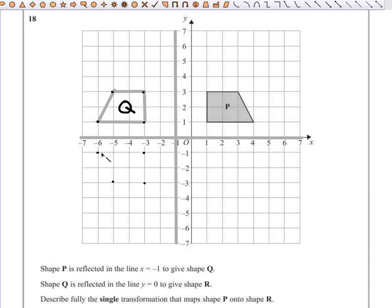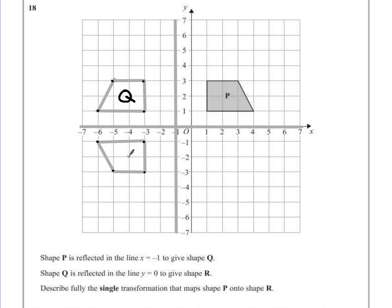You could use tracing paper at this stage or a mirror to work out where the reflections would go. And this shape we're told is called shape R.